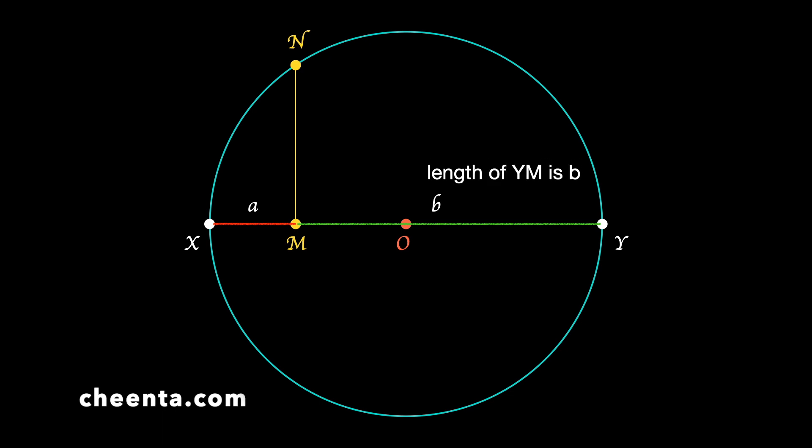The other part is YM. Suppose the length of YM is small b. So M is dividing the diameter into two parts, XM and YM, which are of length small a and small b.